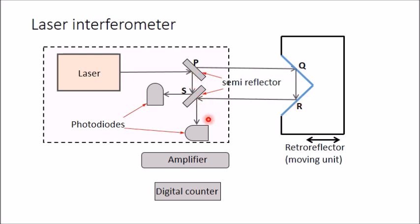If this difference is an odd multiple of half wavelength of the laser wave, you will get a dark band. Similarly, if this difference PQRS minus PS is an even multiple of half wavelength of this laser, you will get a light band.